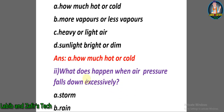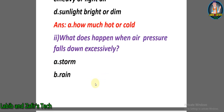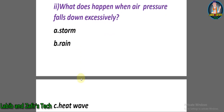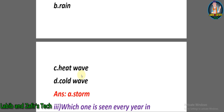MCQ number two: What does happen when air pressure falls down excessively? A) Storm, B) rain, C) heat wave, D) cold wave. The answer is A — storm.